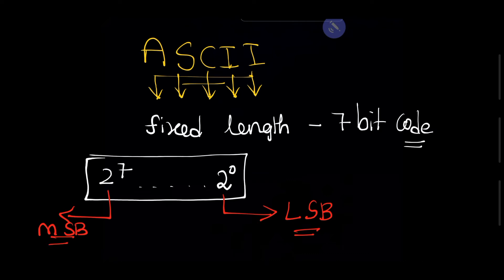This is the LSB position and this is the MSB position. LSB means least significant bit, MSB means most significant bit.